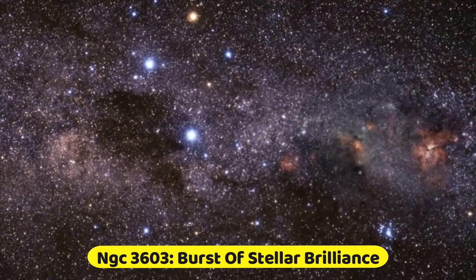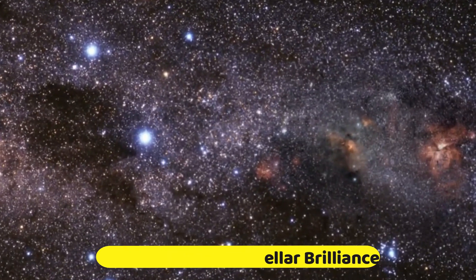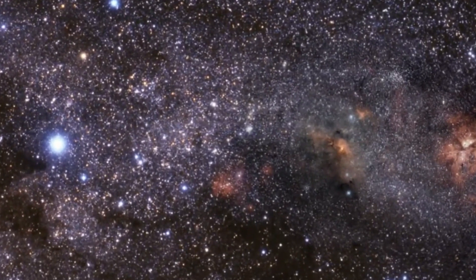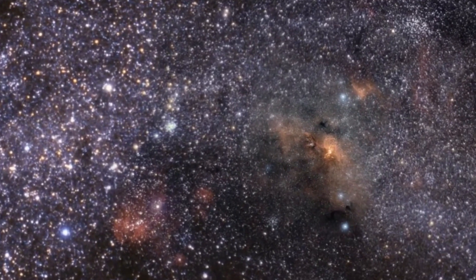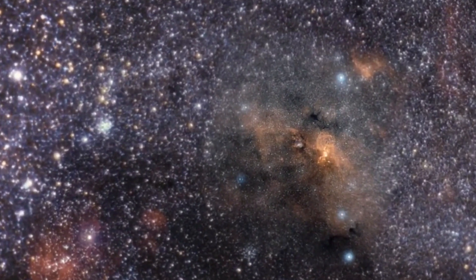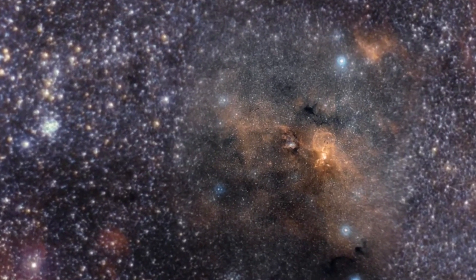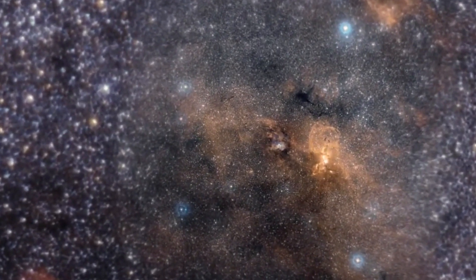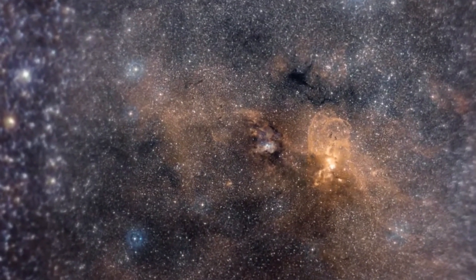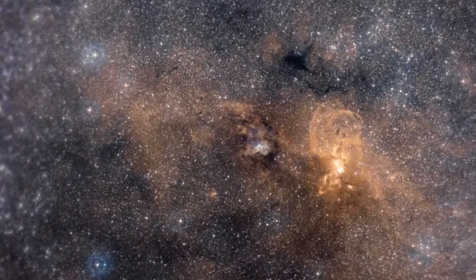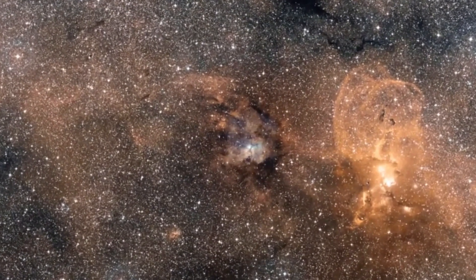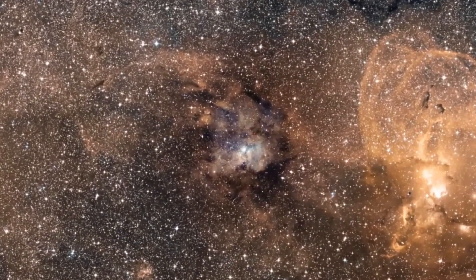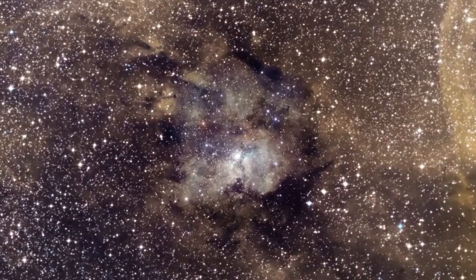Number 2. NGC-3603. Burst of stellar brilliance. Prepare to be starstruck by the extreme star cluster in NGC-3603. The telescope's lens captures this cosmic masterpiece, where stars are born and sculpt the space around them. This star-forming wonderland, created in a stellar rush around a million years ago, showcases its hot blue core stars, which carved a magnificent cavity within the gaseous clouds. A snapshot of the incredible dynamism of the universe, captured by the watchful eye of the James Webb Space Telescope.